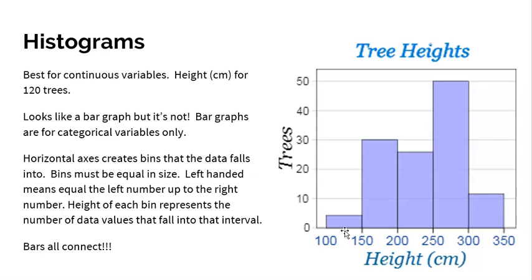This bin right here, 100 to 150, this would be a bin for any tree that starts at 100 centimeters and goes up to 150. We call this a left-handed bin, meaning that we equal the left side, we go up to the right side. If you are a tree from 100 to 149.9999 centimeters, you would go into this bin right here. And it looks like maybe four trees fell into that bin. That is one disadvantage - we talked about this with bar graphs as well. You kind of have to eyeball what you think that is, and it looks like about four. Four trees fell into that bin.